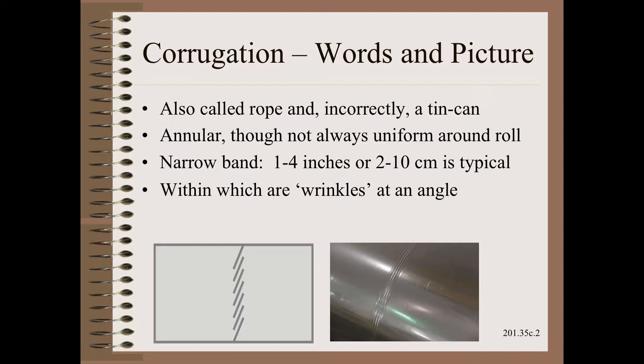Corrugations go by other aliases such as ropes, chain marks, and quite incorrectly, the tin can. I say incorrectly because the tin can is a totally different defect in both mechanism as well as list of remedies. More to the point, the profile that causes a corrugation is quite different than the profile that makes a tin can worse.